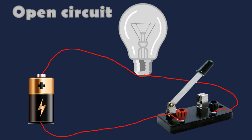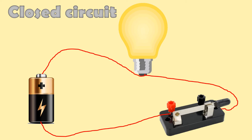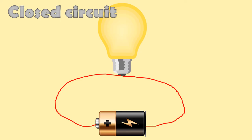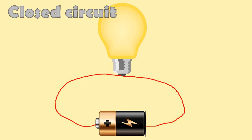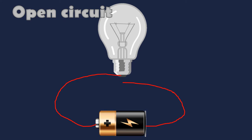Again, we have here a closed circuit, open circuit, open circuit, closed, closed, and open. We have a closed circuit, open circuit, closed, open, closed, and open. I hope you understand the tricky part of our lesson for today. And now, it's DIY time. Just get your home activity paper and make your own electric circuit.